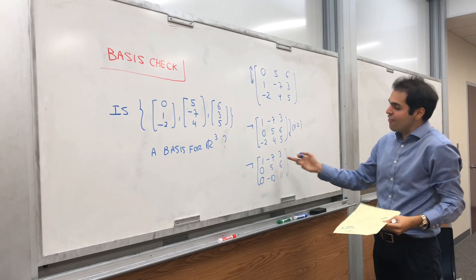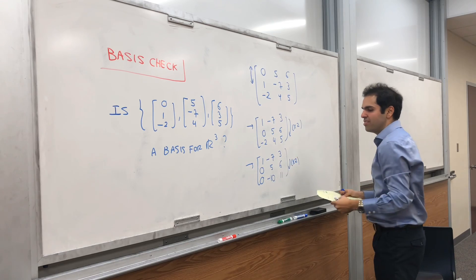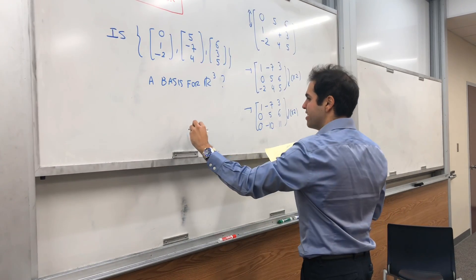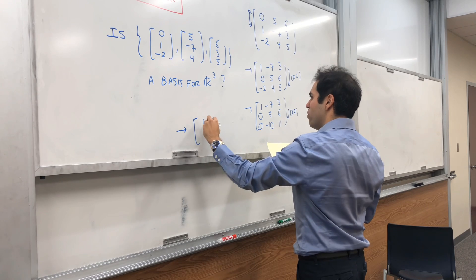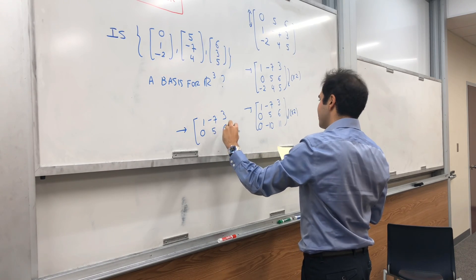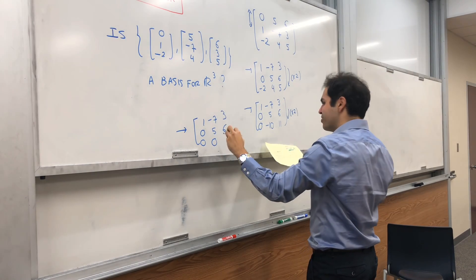Now, this 5 and minus 10, they go very well together. So, let's add 2 times this row to this row. And you get, maybe let me do it in the same whiteboard. 1, minus 7, 3, 0, 5, 6, and then 0, 0, and then some weird number, 23.